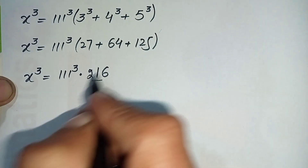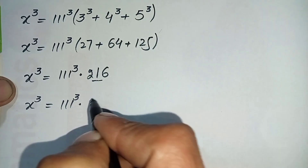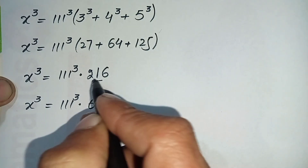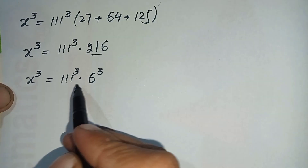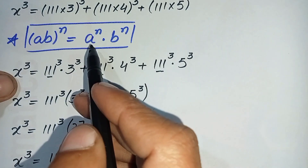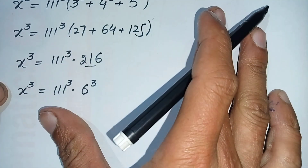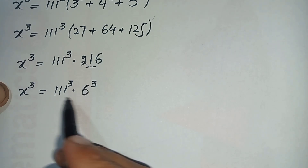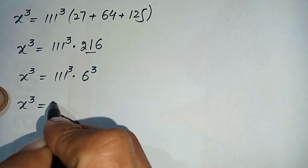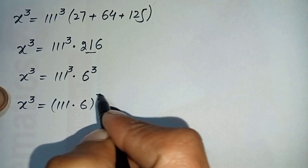In the next step we convert 216 into exponential form. We can write 216 as 6 raised to power 3, because 6 × 6 × 6 = 216. Now the right-hand side has 111³ × 6³. Since both bases have the same power, we use the product-to-power property in reverse — we multiply the bases and take the power common. So x³ = (111 × 6)³.